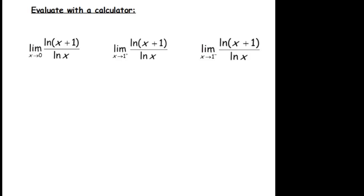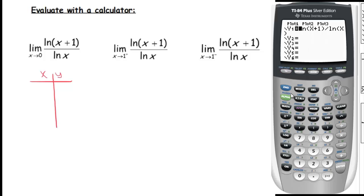So as usual I'm going to make a table down here and record what I find in my function. In y equals you should put this function here. Then go to your table set, hit second window and make sure your independent variable is set to ask not auto.